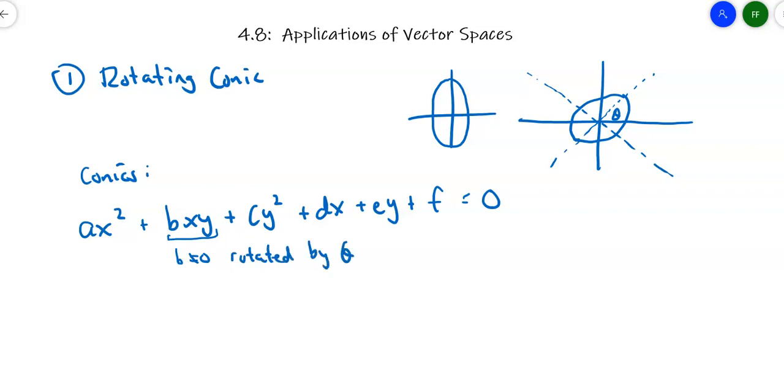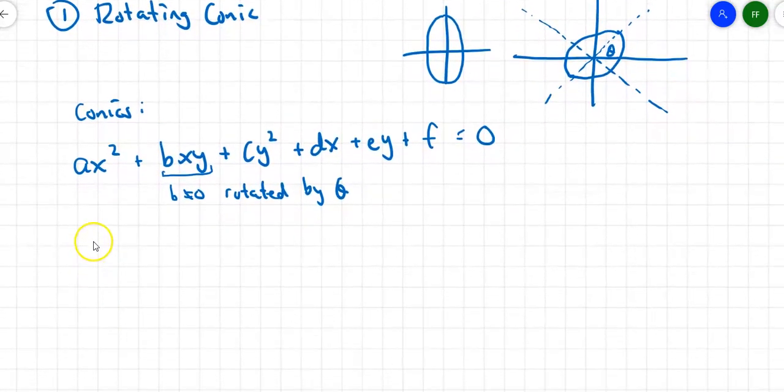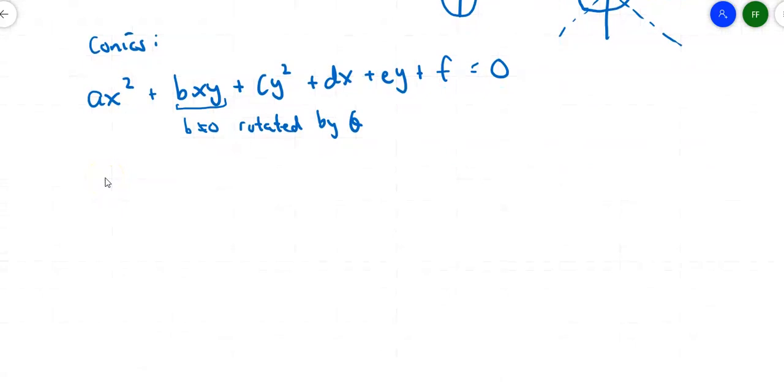Probably up until this point, all the conics that you've done have not had an xy term, because I suspect the conics you've graphed have looked more like the first one than the second one. If it does have an xy term, so if it is rotated, it's going to be rotated by an angle theta that follows this formula: cotan(2θ) = (a-c)/b. If b equals zero, the problem ends because you're going to have a cotan that's undefined.